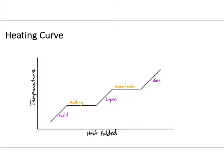Temperature is not the same as heat — keep those two concepts separate. As you add heat to a solid, the particles inside start to vibrate faster and faster. As they vibrate faster, their kinetic energy increases, and subsequently their temperature increases — that's why we have a sloped line on the heating curve.